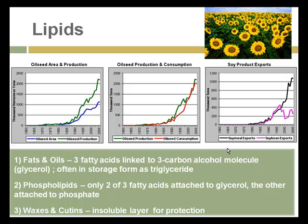Lipids are the fats and oils. We're very familiar with fats and oils, especially in the seeds of plants like sunflowers. Three fatty acids are linked to an alcohol molecule in glycerol and triglycerides. Glycerol and triglycerides are where much of the fats are stored in plants to support growth, especially of embryos. We tend to consume those seeds in order to use those fats for our own growth and development. Waxes and cutins are frequently found in the leaves of plants, especially in the epidermal layers — those are also lipids, fatty molecules that are insoluble and used for protection of the plant.